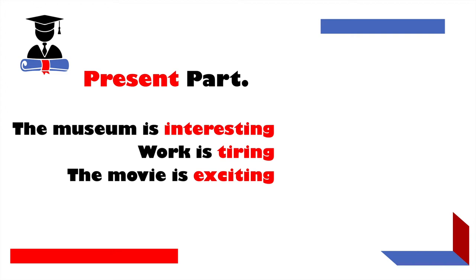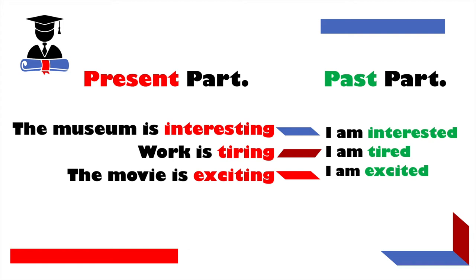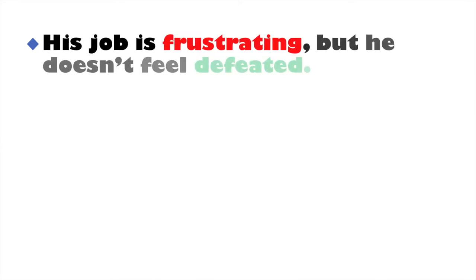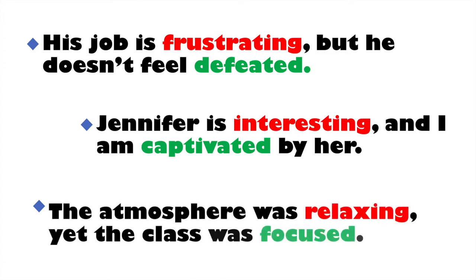Now with past participles: the museum is interesting — I'm interested. Work is tiring — I am tired. The movie is exciting — I am excited. So his job is frustrating, but he doesn't feel defeated. Jennifer is interesting, and I'm captivated by her. The atmosphere was relaxing, yet the class was focused. 'Captivated' and 'focused' are past participles, 'relaxing' is the present participle.